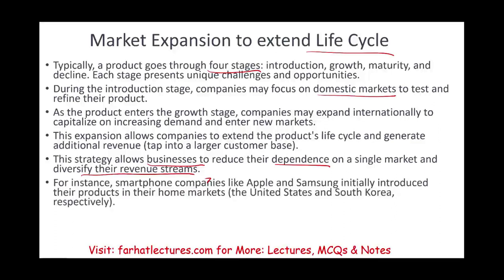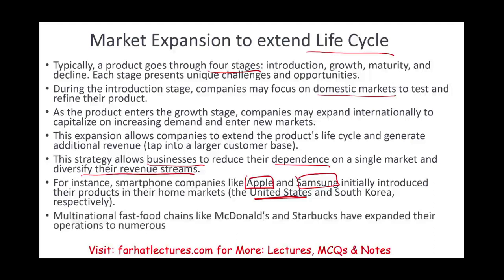For example, when the first smartphone came out, Apple introduced it in the U.S. first to test it, and Samsung introduced it in South Korea. Then both expanded internationally. Similarly, fast food chains started in the U.S. — once they had a McDonald's in every town and city, they expanded internationally to keep the growth going.